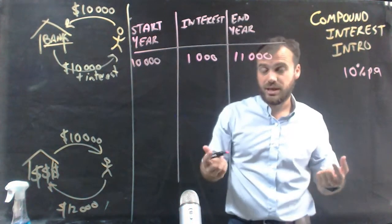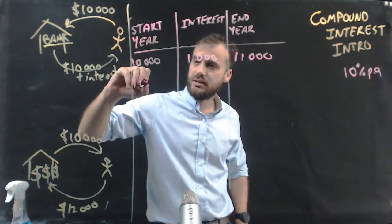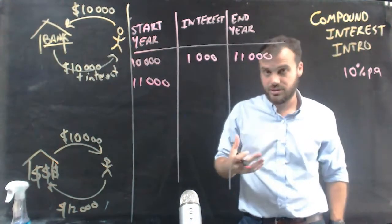Now let's leave it in the bank. This seems pretty good. So we'll leave it in the bank. At the start of the second year, you have $11,000 in the bank.